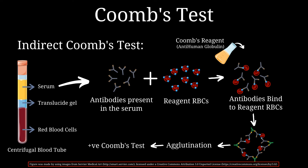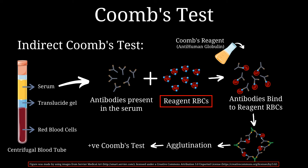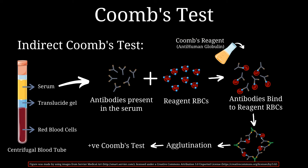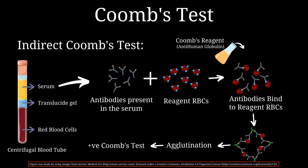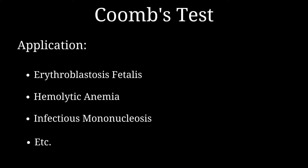For the indirect Coombs test, a blood sample is centrifuged to separate the serum. The serum is then mixed with reagent red blood cells that already contain the antigen to be tested, and Coombs reagent is also added. If antibodies to be tested are present in the serum, they bind to the reagent red blood cells, and the Coombs reagent then completes the reaction, causing agglutination to take place. If agglutination occurs, it indicates a positive Coombs test.